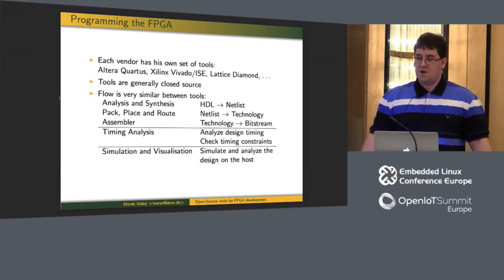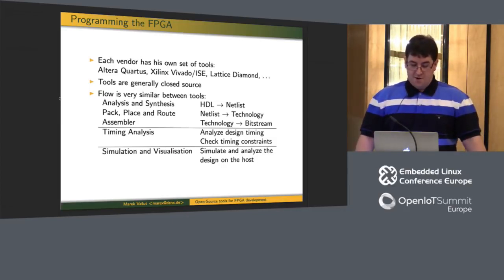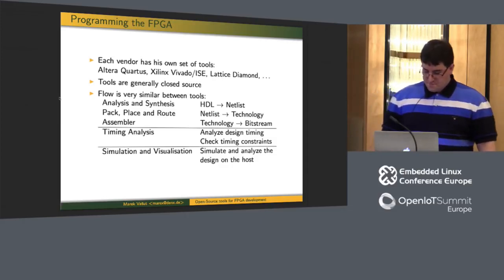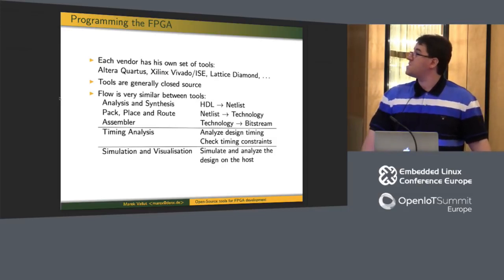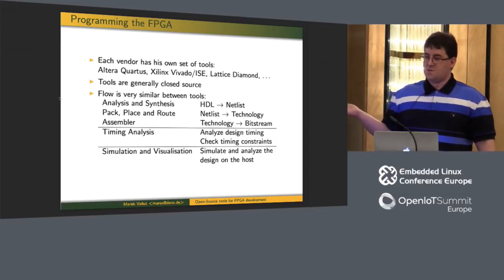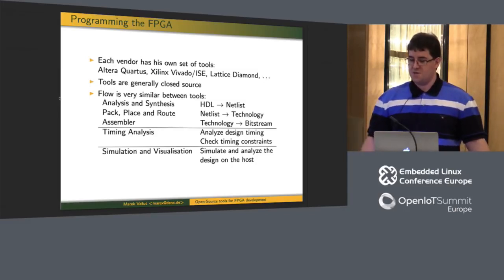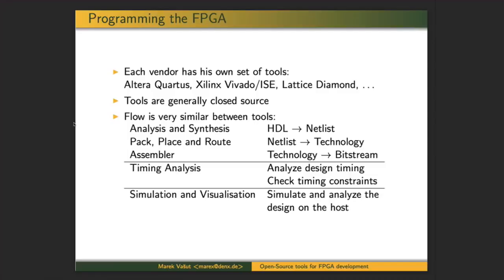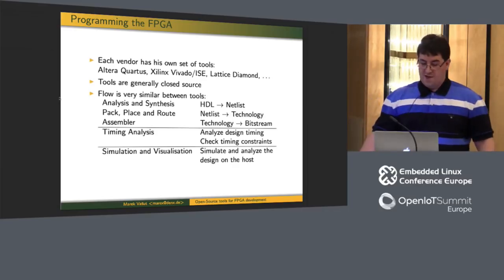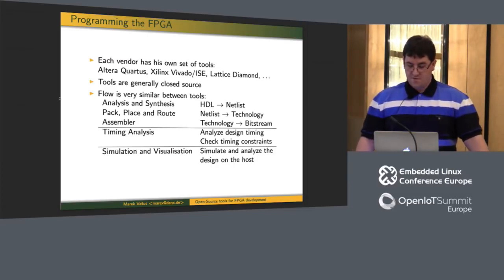On the side there are two more steps: timing analysis, which is important for high-speed designs, and simulation and visualization. The first step — analysis and synthesis — reads the source HDL files and converts them into a sort of schematic of the circuit called the netlist. During place and route, this schematic is combined with knowledge of the actual target FPGA, and you get a technology map netlist — the netlist augmented with placement information. Finally, the assembler transcribes this augmented netlist and produces the bitstream file.